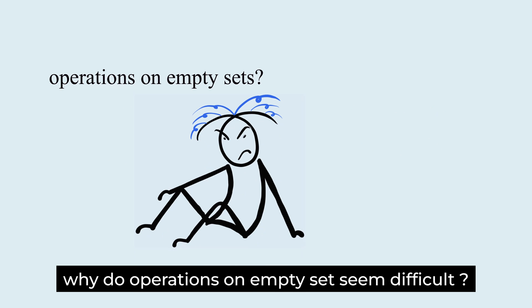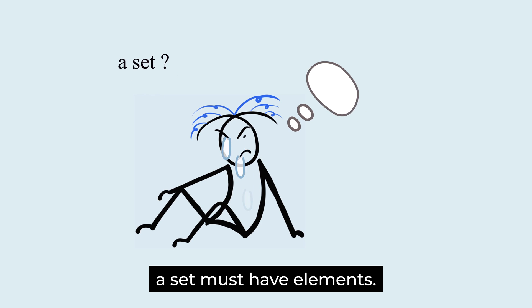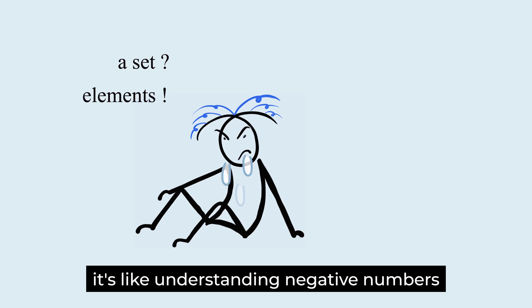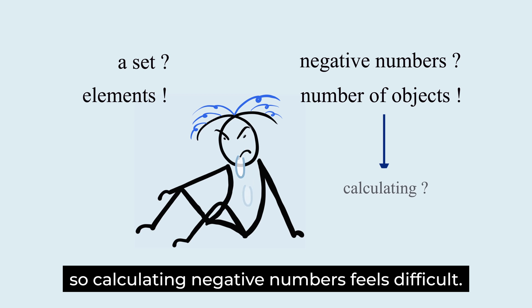Why do operations on empty sets seem difficult? This is because of the intuitive idea that a set must have elements. It's like understanding negative numbers as the number of objects. So, calculating negative numbers feels difficult.